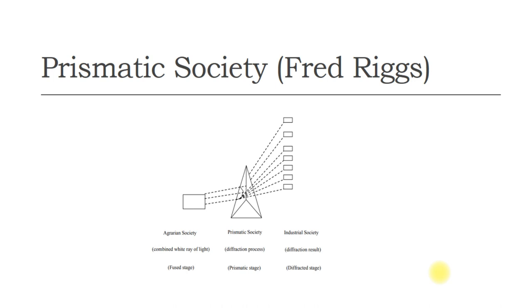Hence, he included a two-dimensional model with reconceptualized diffracted societies as eco-diffracted, ortho-diffracted, neo-diffracted, and prismatic societies as eco-prismatic, ortho-prismatic, and neo-prismatic societies.